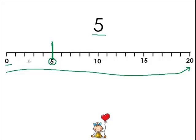And what is also good to know is that in between the 0, the 5, the 10, the 15, and the 20 are these little lines. And these little lines represent the numbers in between.